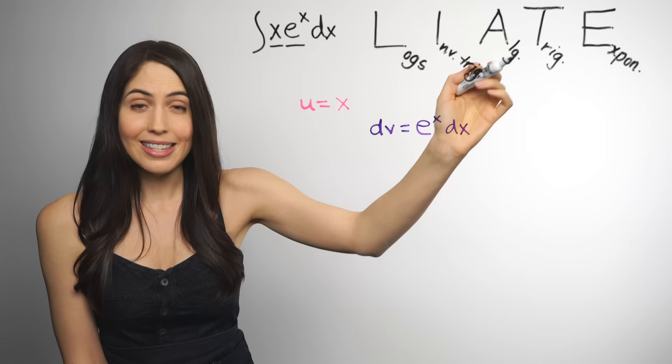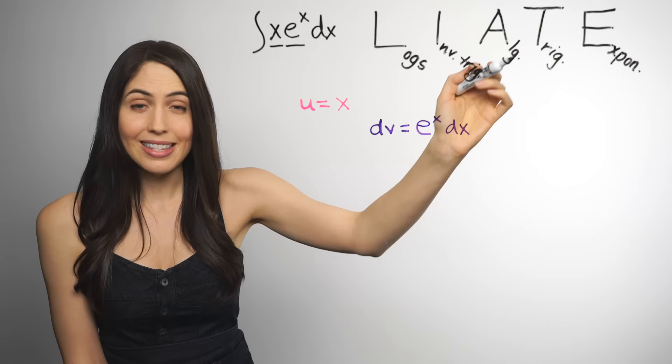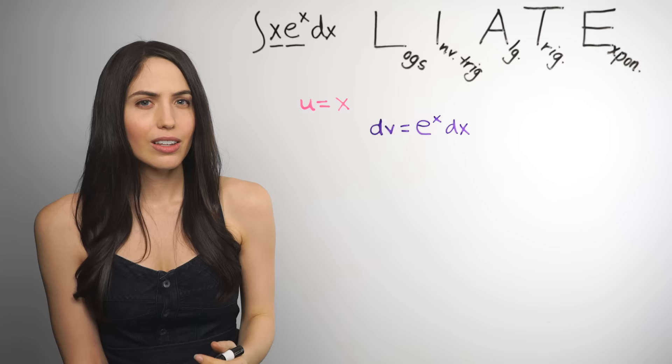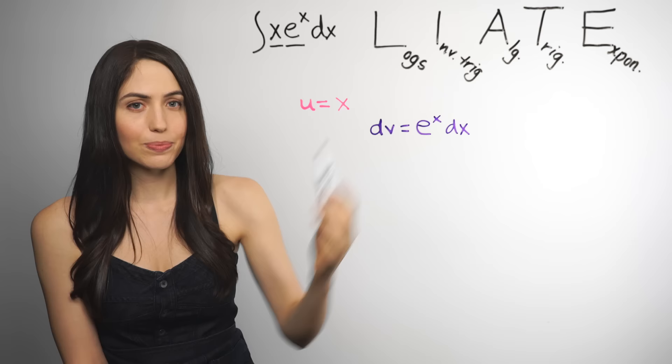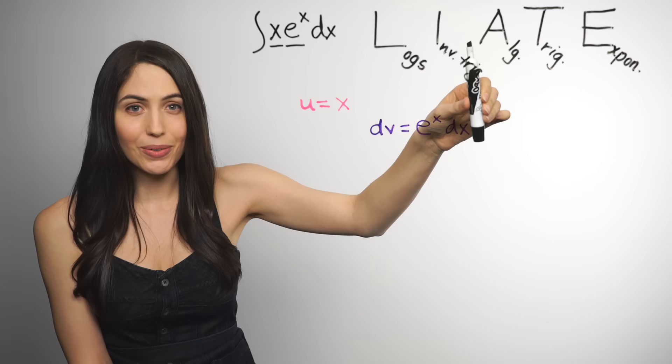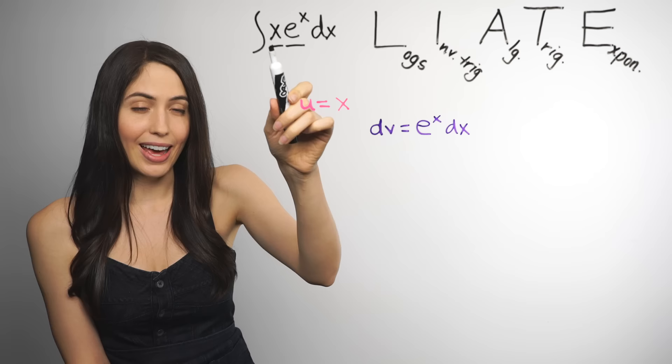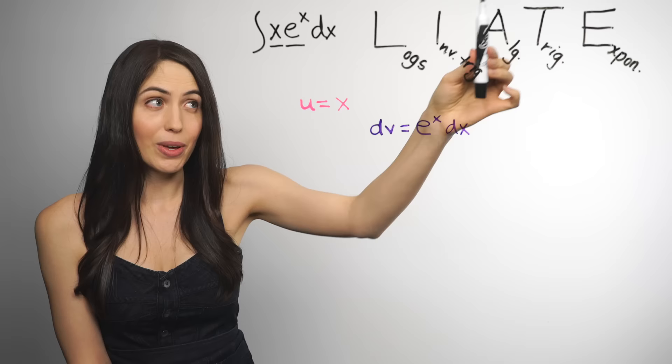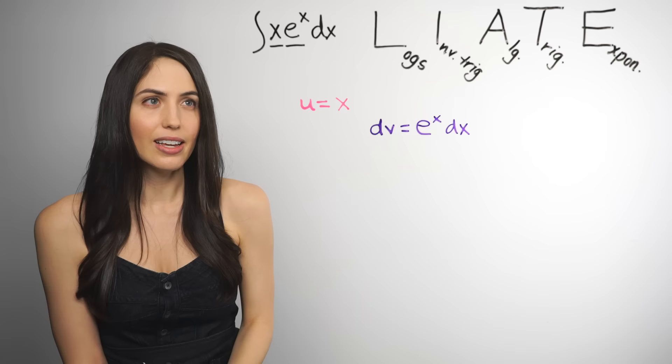So the trick is to follow these letters in sequence. And the first one you find that you have is your u. So what do we have? We have x and e to the x. x is algebraic. e to the x is exponential. So we have A and E. If you follow those letters in sequence, the first one you encounter that we have is A algebraic. So that x has to be our u. u is x. And the next thing we find that we have is E exponentials. So that's our dv. dv is e to the x dx. So that's the trick. It's a fun party trick.